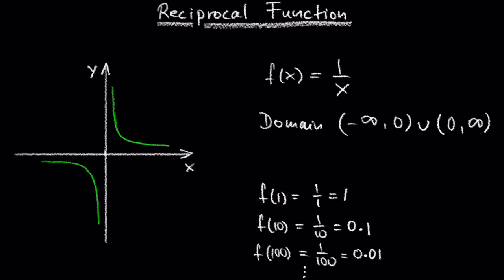And on the other hand, when x is getting smaller, 1 divided by x is getting bigger. When we plug in a 1, we get 1 as an output. When we plug in 0.01, we get 100 and so on.